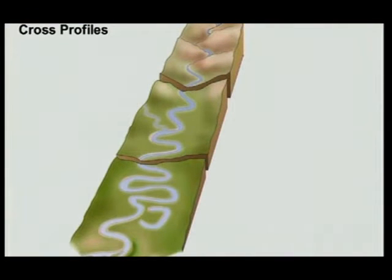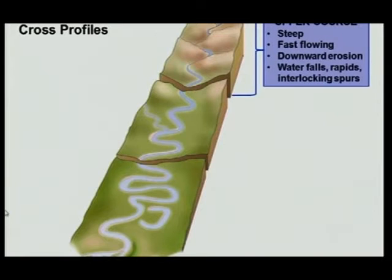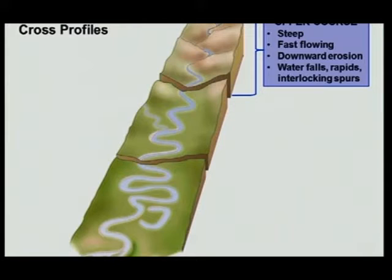We showed you a video clip of longitudinal and cross profiles. It had to do with the three parts: the upper course, the middle course, and the lower course. The upper course is steep, fast-flowing, with downward erosion. There we usually get our waterfalls, rapids, and interlocking spurs. The cross profile in the middle course would look something like this — from the one river bank to the other river bank.